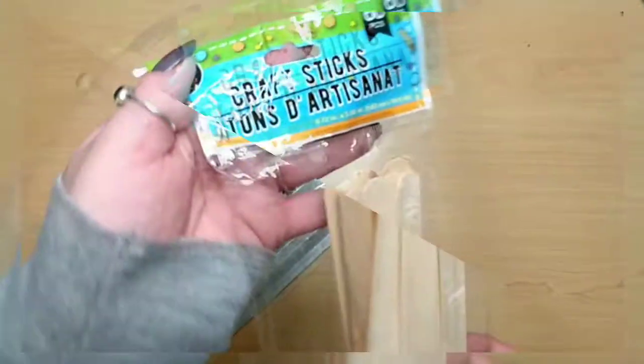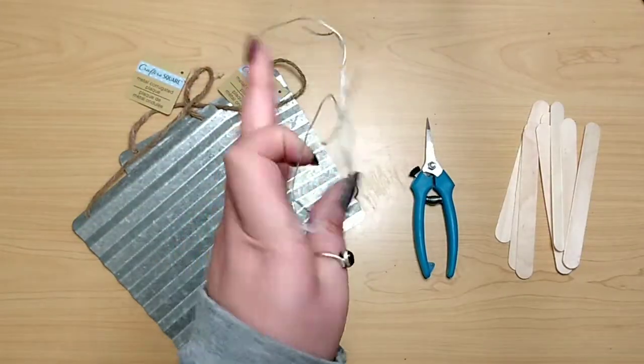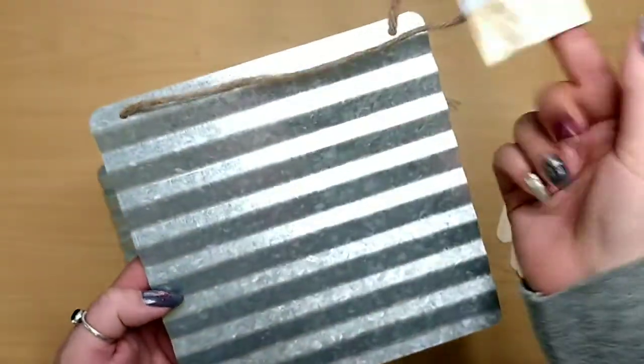So you will need nine of these craft sticks, some wire to create a hanger, and two of these metal corrugated plaques from the Dollar Tree that I absolutely adore.